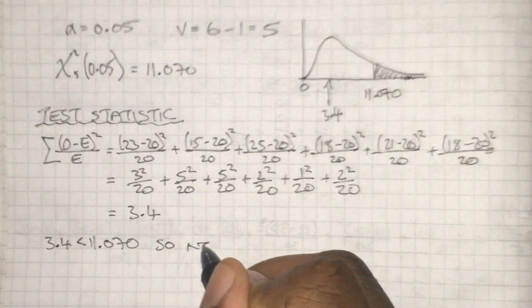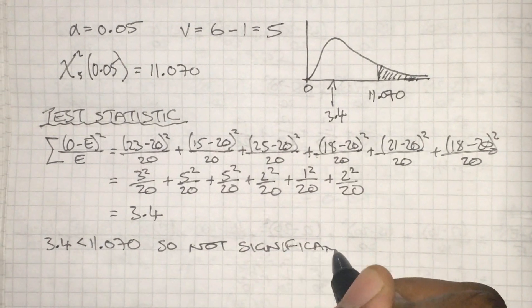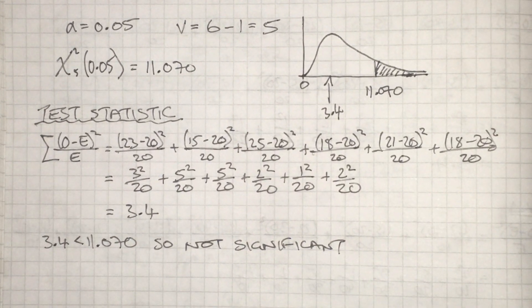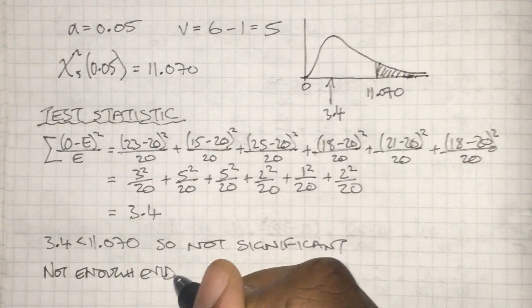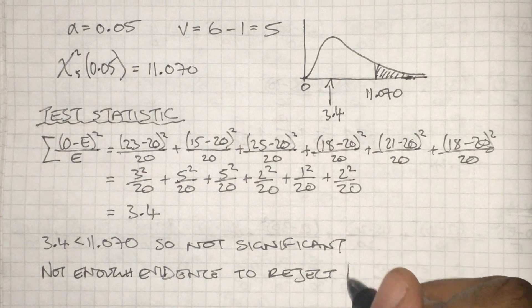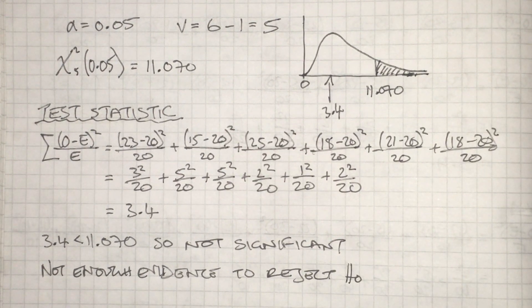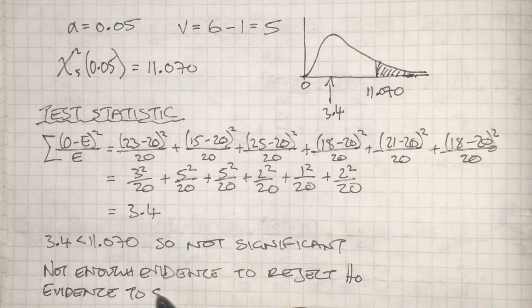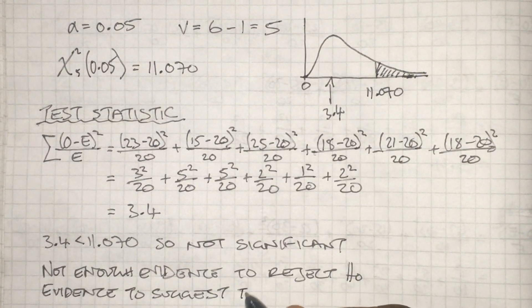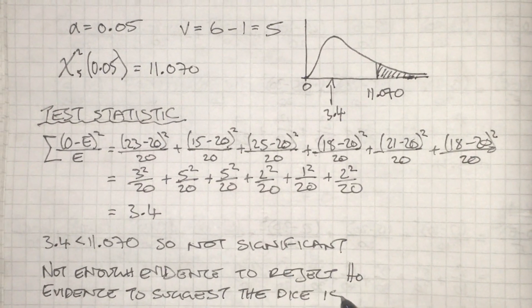3.4 is not in the critical region, not significant. 3.4 is less than 11.07, so there is not enough evidence to reject H0. In context, there is evidence to suggest the dice was actually fair.